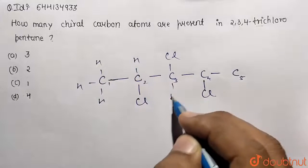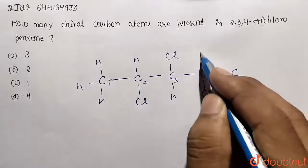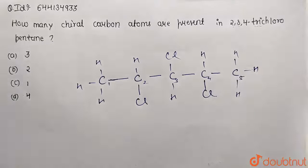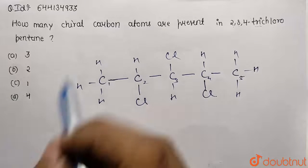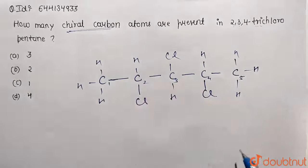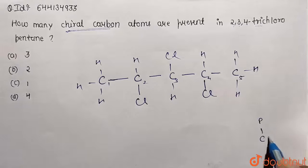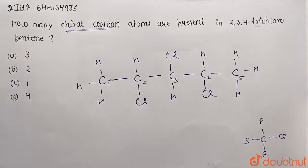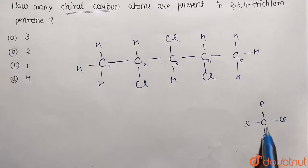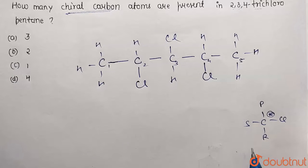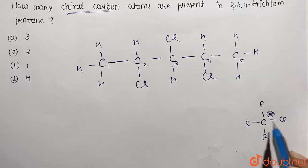Now our task is to find the chiral carbons. A chiral carbon is one that contains four different groups — P, Q, R, and S — all different from each other. If a carbon has four different groups attached to its four sides, it is said to be a chiral carbon.